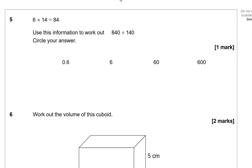6 times 14 equals 84. Use this information to work out 840 divided by 140. Circle your answer. So 6 times 14 equals 84. To change it around so it looks similar to this, we can do 84 divided by 14 equals 6. So 84 divided by 14, we could write it like this as well. Now we've got, on the other hand, 840 divided by 140.